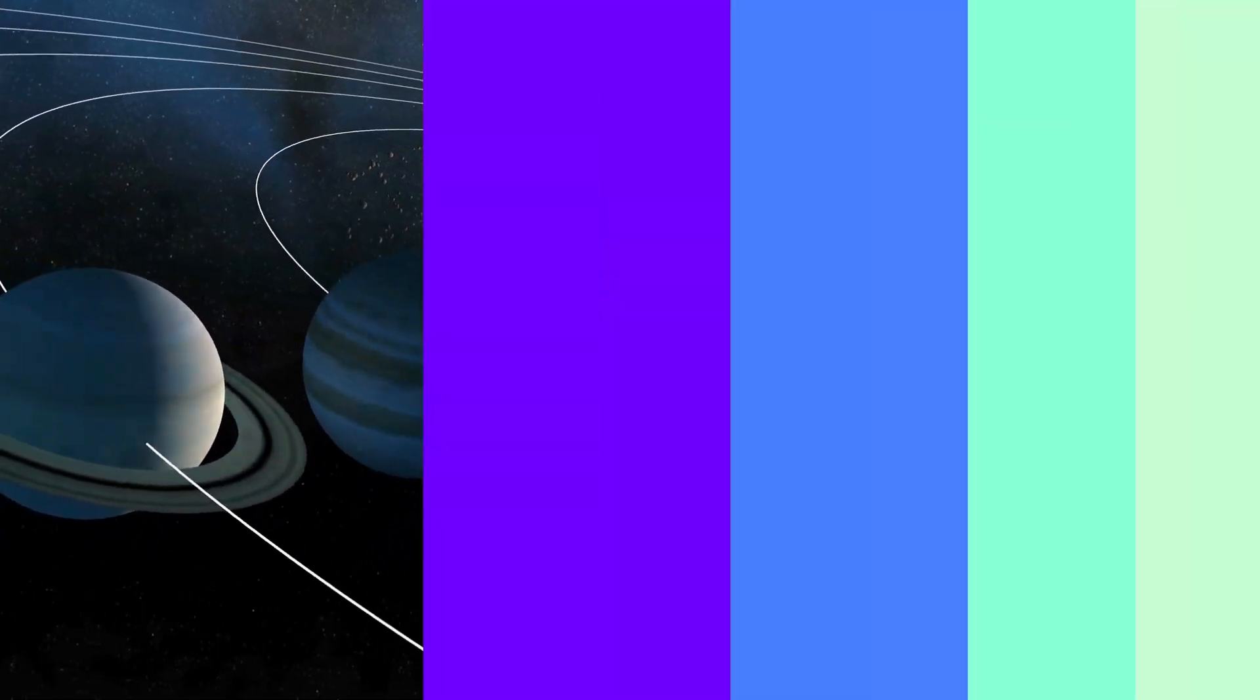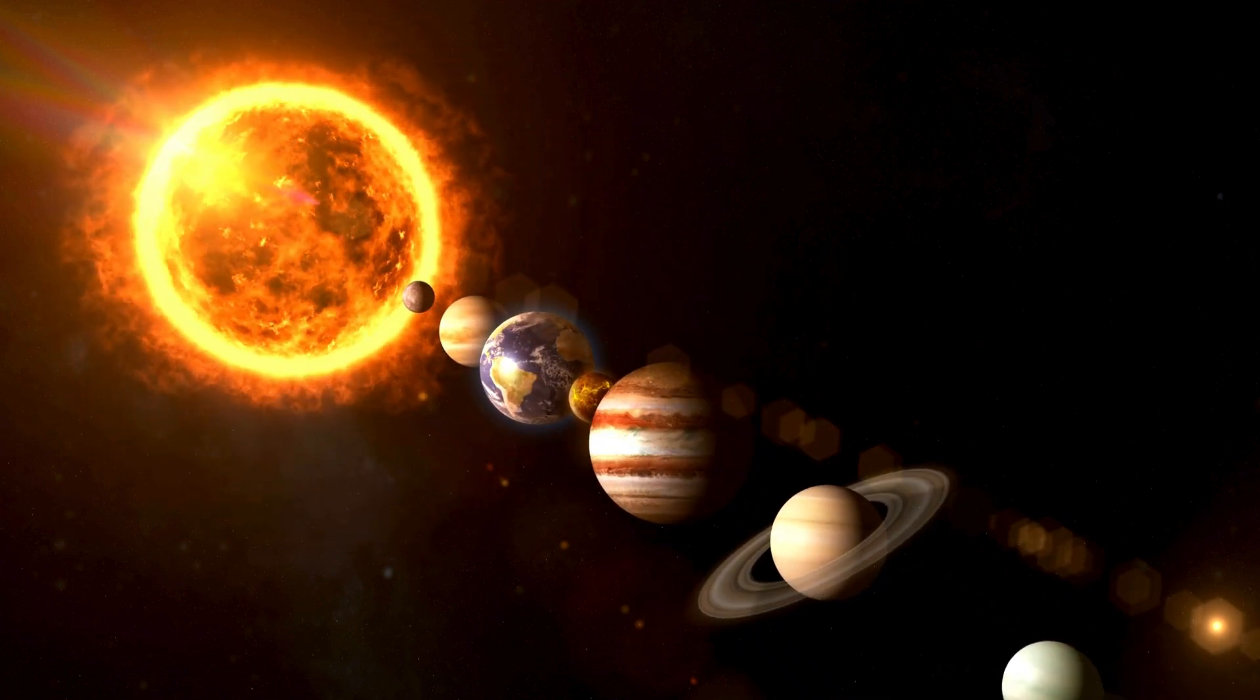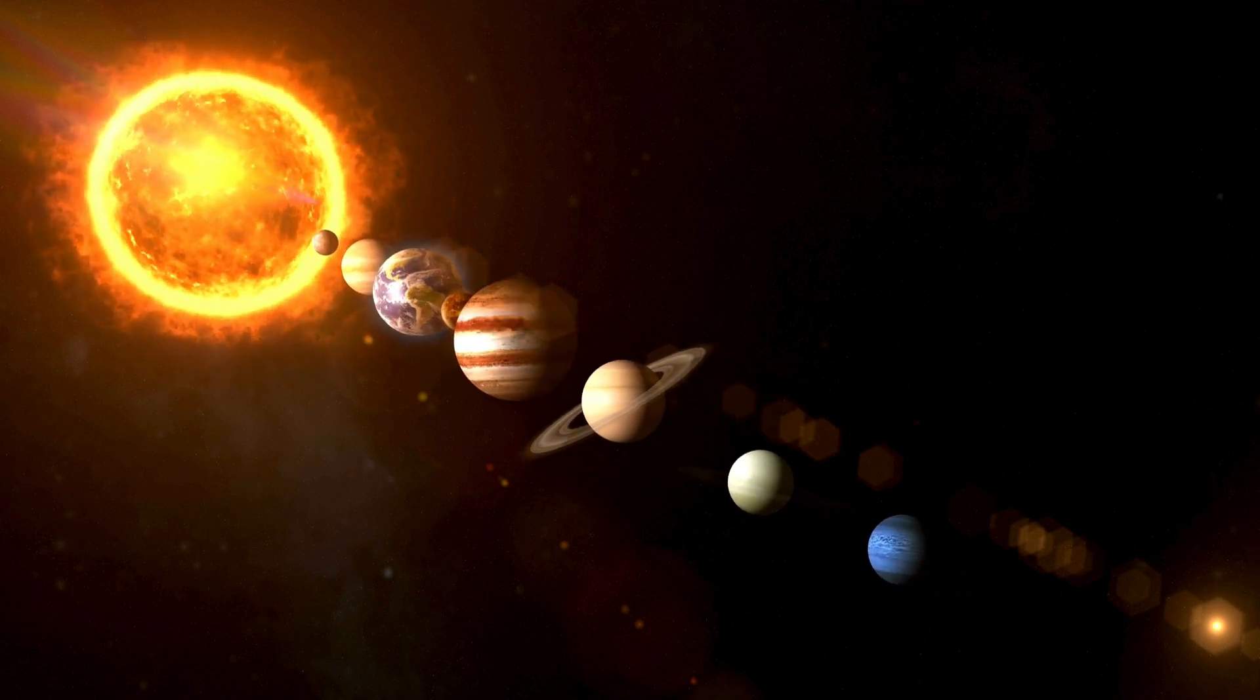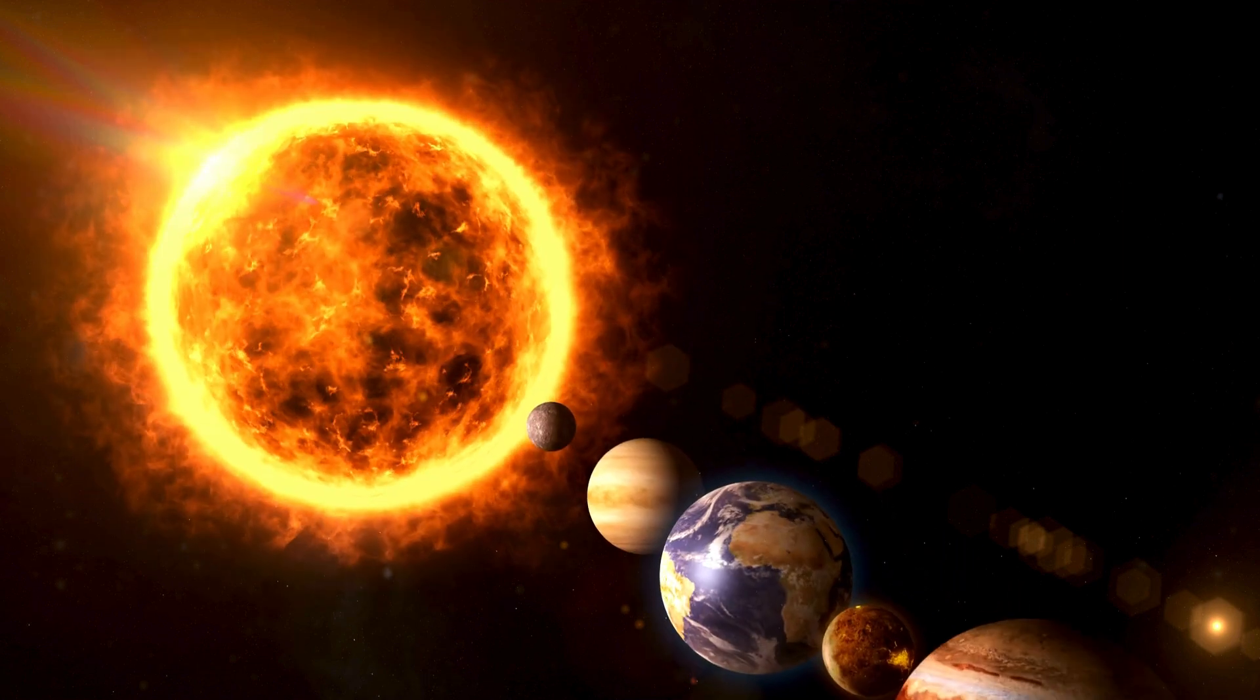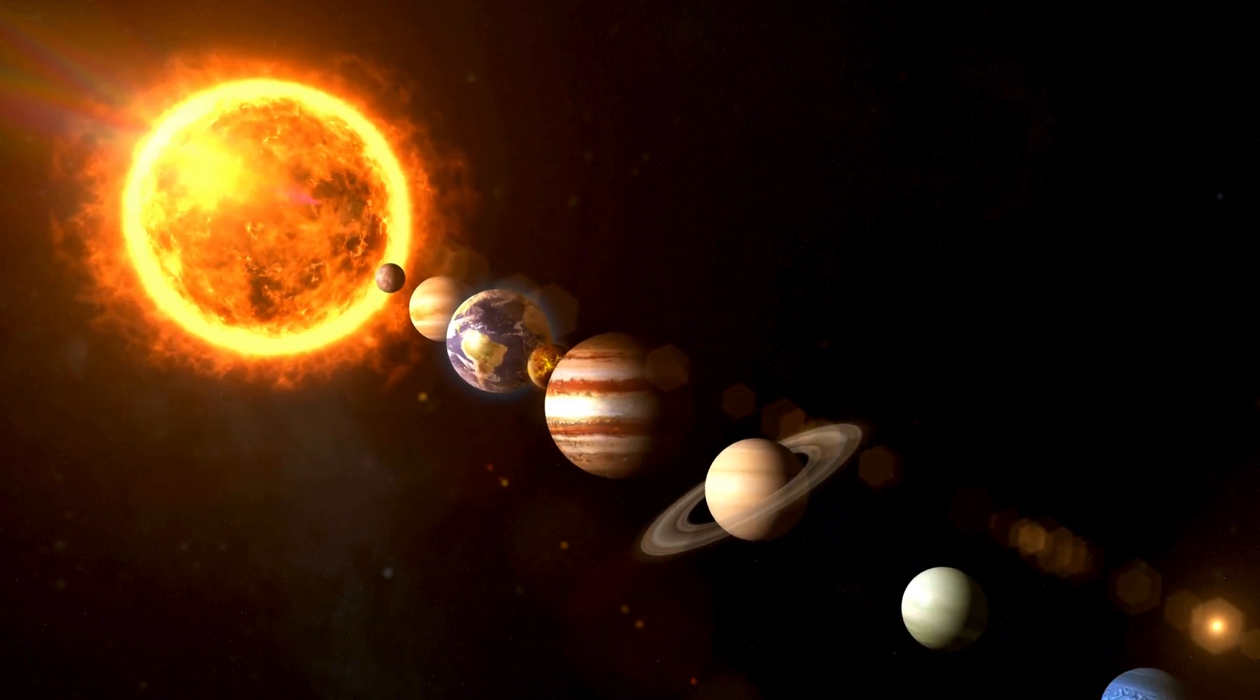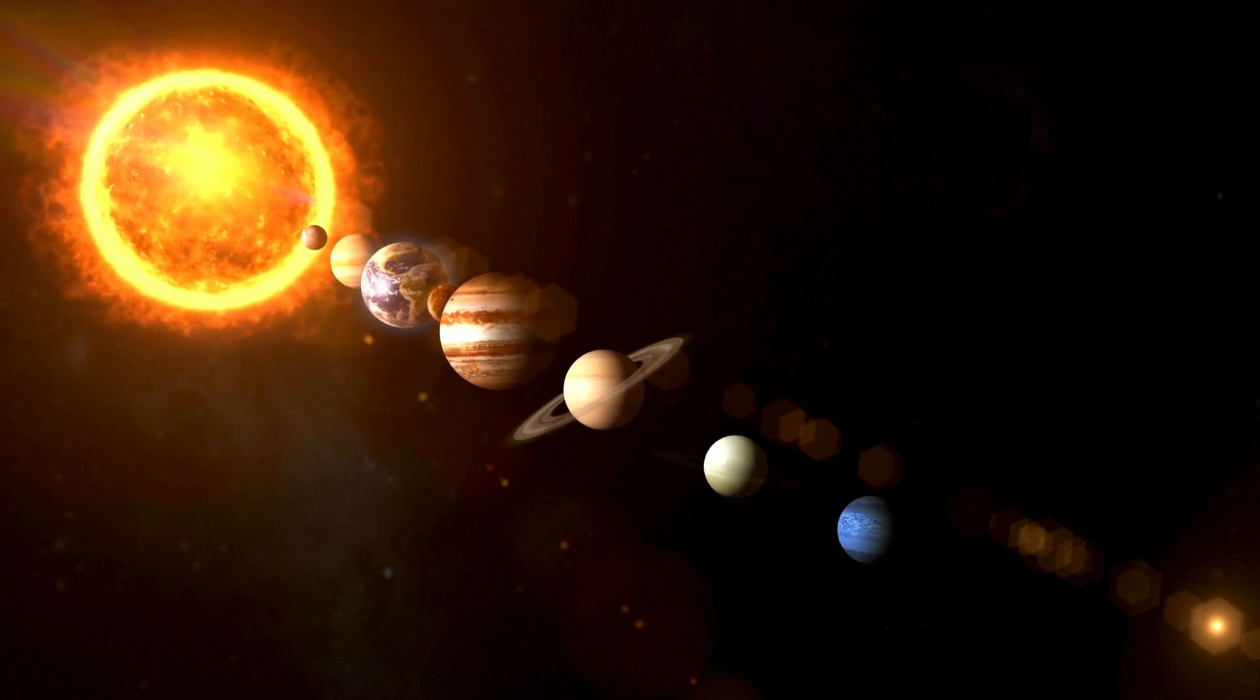How do we know about other planets? We learn about other planets through telescopes and space missions. Telescopes are like super strong binoculars that can see really far into space. They help us see what planets look like even though they are millions of miles away.